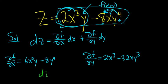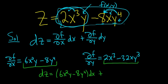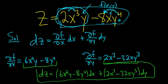So now we can write down the final answer. So dz is equal to del f del x, which is right here. So parentheses 6x squared y minus 8y to the 4th dx. And del f del y, which is right here. So 2x cubed minus 32xy cubed dy. And that is the total differential. I hope that made sense.